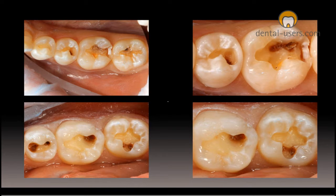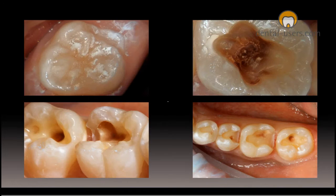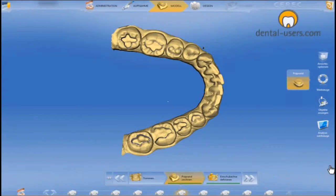We then changed our plans and we didn't extract the wisdom teeth. Instead we opened up the fissure and we saw that there was decay on nearly all of the side teeth. This is the situation after the decay has been removed. In one area of the upper seven the decay actually reached to the pulp.